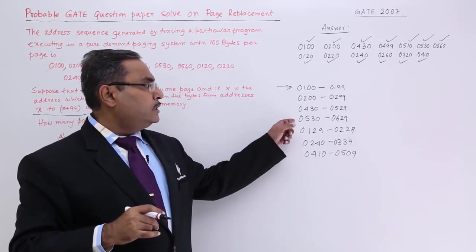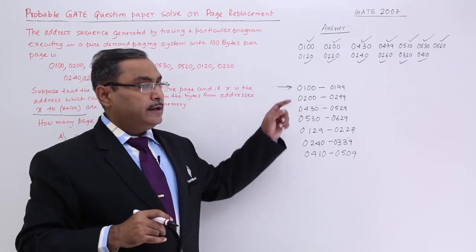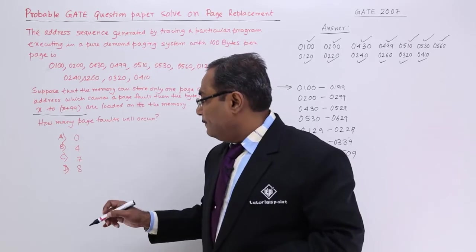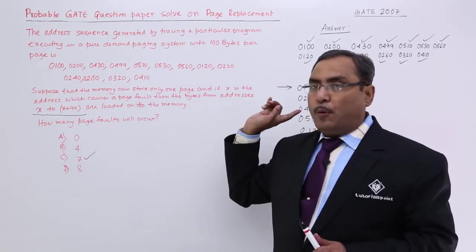How many times the page fault has occurred? How many times? 7 times. 1, 2, 3, 4, 5, 6, 7. So the answer will be 7. Yes, I am getting one option 7. So in this way, the problem can be solved.